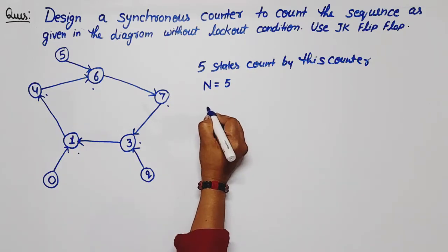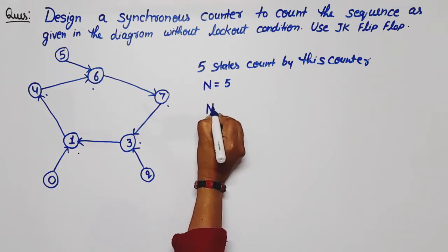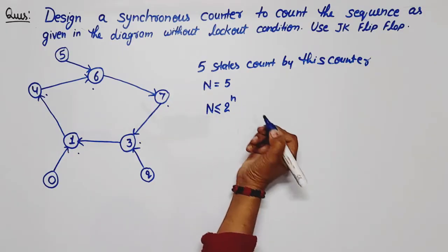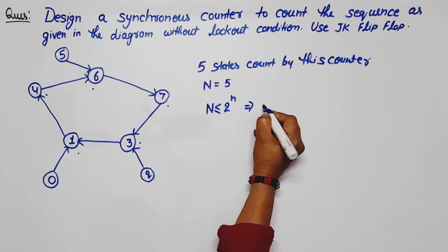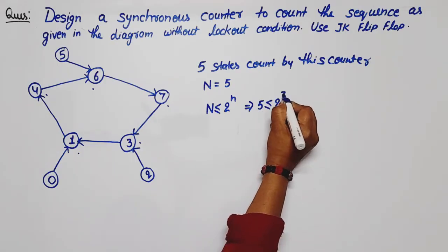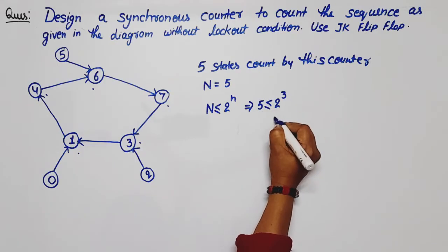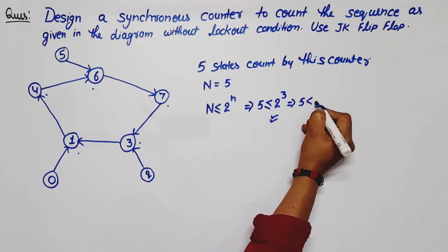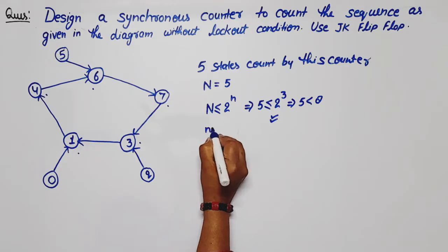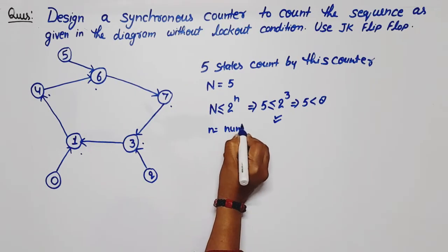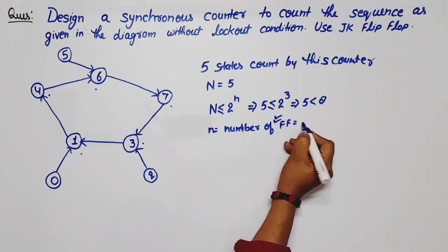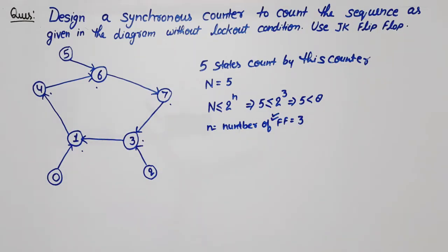Now, how many flip-flops are required? We check the condition: capital N should be less than or equal to 2 raised to the power of small n, where small n is the number of flip-flops. We have 5 less than or equal to 2 raised to power 3, and the condition is satisfied because 5 is less than 8. So the number of flip-flops is equal to 3.